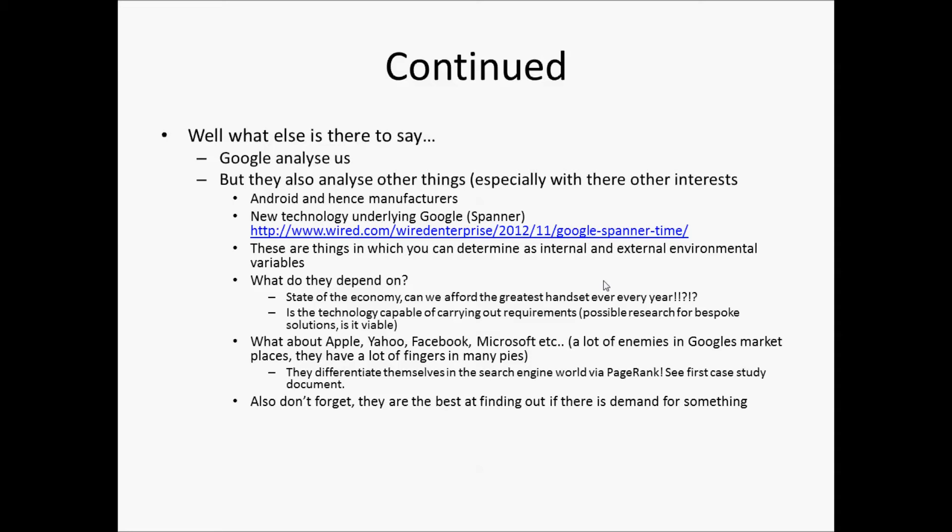Google Spanner is a new massive distributed database - I'll be talking about that in the distributed database course at honours level. These are the kinds of internal and external environmental variables to consider: is the technology capable of carrying out requirements, is bespoke research possible, and are they going to have to invest heavily? Those are the questions that arise.